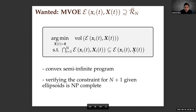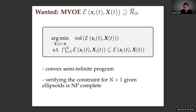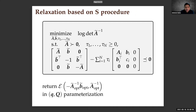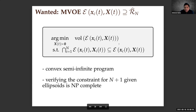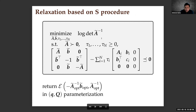Unlike finding the MVOE of a finite point set (which is a semidefinite program), it is not known whether this semi-infinite problem is efficiently representable. In fact, verifying the containment constraint for the given N+1 ellipsoids is NP-complete — it is a computationally hard problem. The standard approach in the literature is to obtain a relaxation based on the S-procedure: one solves a max-det problem subject to LMI constraints, in ABC parameterization, to get an ellipsoid that is guaranteed to be an over-approximation of the true MVOE.